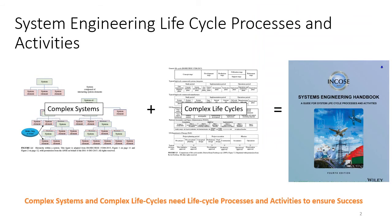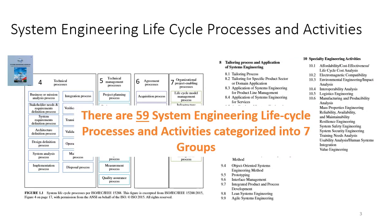As we discussed in the previous video, the System Engineering Handbook with its System Lifecycle Processes and Activities is a structured approach intended to provide system engineers ways for managing complex system design in the context of complex life cycles. The systems themselves are very complex, and so are the life cycles in which they are developed and operated. We need a structured, systematic way of managing the process, and that's what the handbook is all about. Within the handbook there are 59 System Engineering Lifecycle Processes and Activities, categorized into seven major groups.